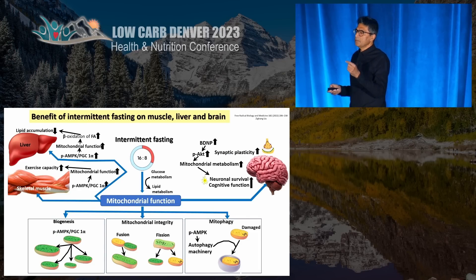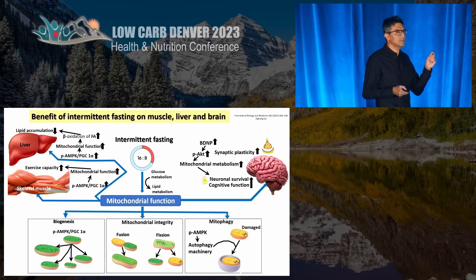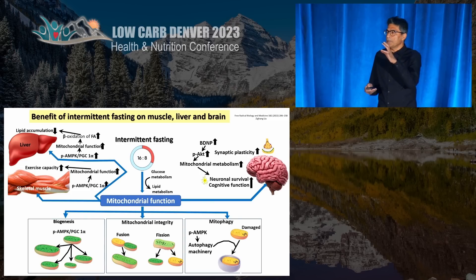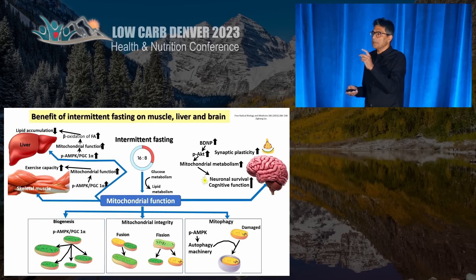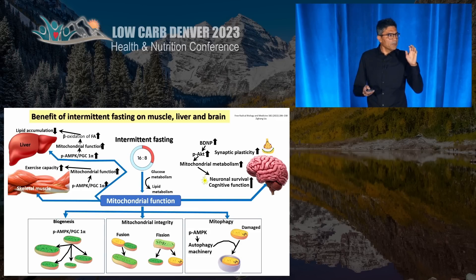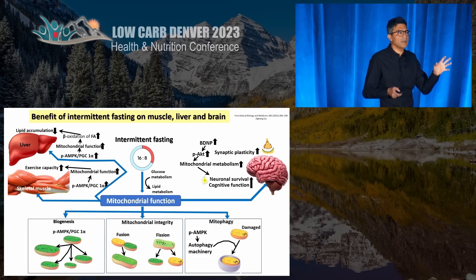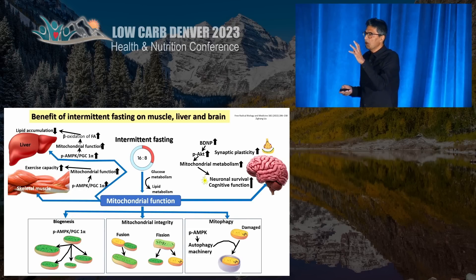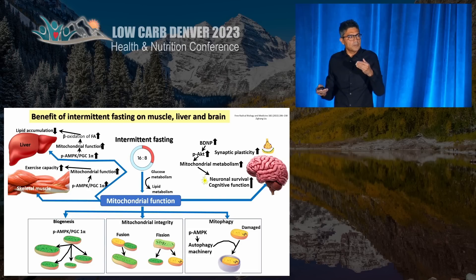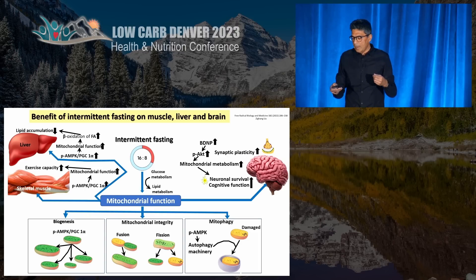The literature on intermittent fasting and improvement in mitochondrial function is in its infancy. But there are several biochemical signals happening with fasting that improve mitophagy, fusion, fission, and mitochondrial biogenesis. This is manifested as reduction in liver fat because of better mitochondrial function, and improvement in exercise capacity because your muscles have better mitochondria. With fasting, you also elaborate something called BDNF, which in the brain improves mitochondrial function, improving connections between neurons, synaptic plasticity, and neuronal survival.